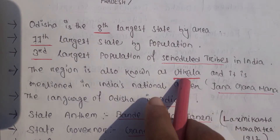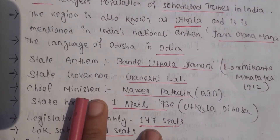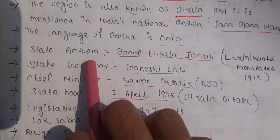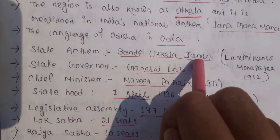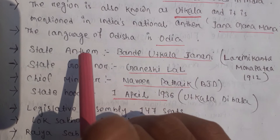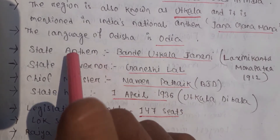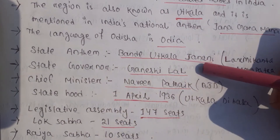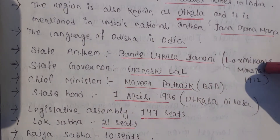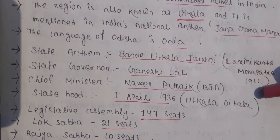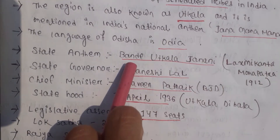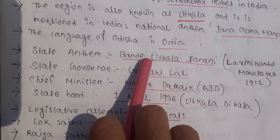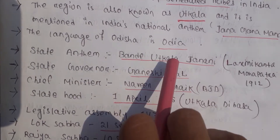The language of Odisha is Odia. The state anthem is 'Bande Uttkala Janani,' written by Lakshmikanta Mohapatra in 1912. Every state has its own anthem, and Odisha's anthem means 'Bande' — Salute, 'Uttkala' — Odisha, 'Janani' — Mother. So it means 'Salute to our Mother Odisha.'